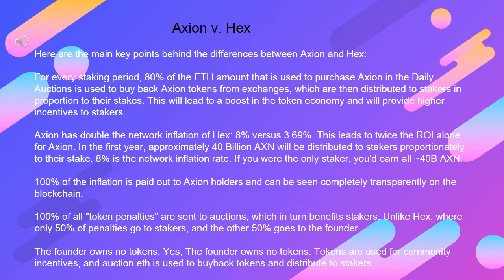Axion vs. HEX. Here are the main key points behind the differences between Axion and HEX. For every staking period, 80% of the ETH amount used to purchase Axion in the daily auctions is used to buy back Axion tokens from exchanges, which are then distributed to stakers in proportion to their stakes. This will lead to a boost in the token economy and will provide higher incentives to stakers. Axion has doubled the network inflation of HEX — 8% versus 3.69% — leading to twice the ROI. In the first year, approximately 40 billion AXN will be distributed to stakers proportionately to their stake.